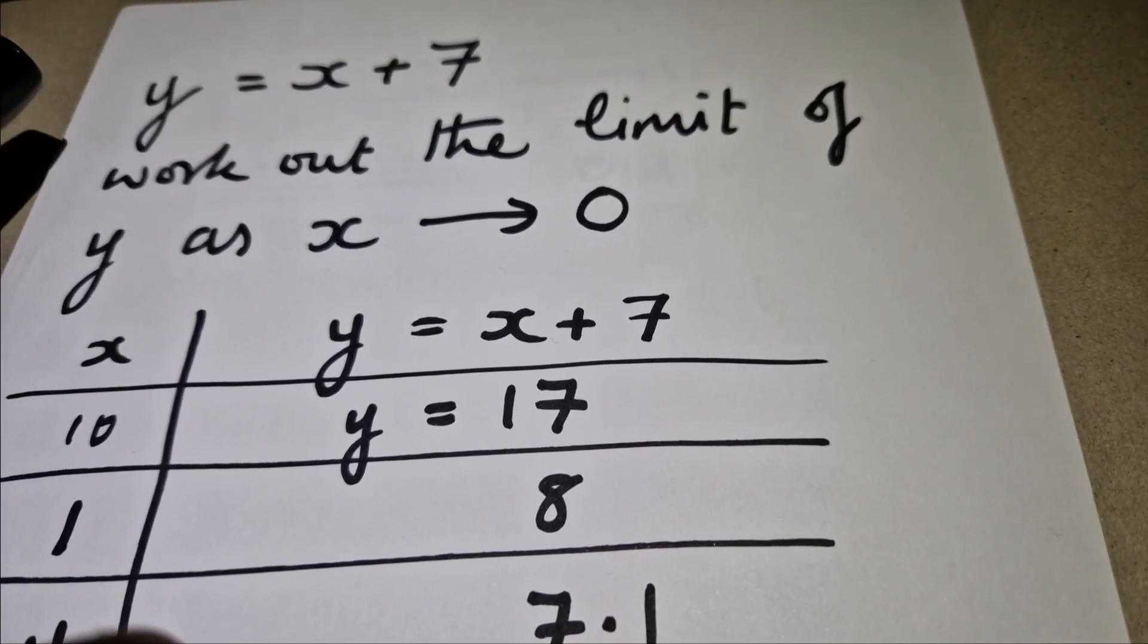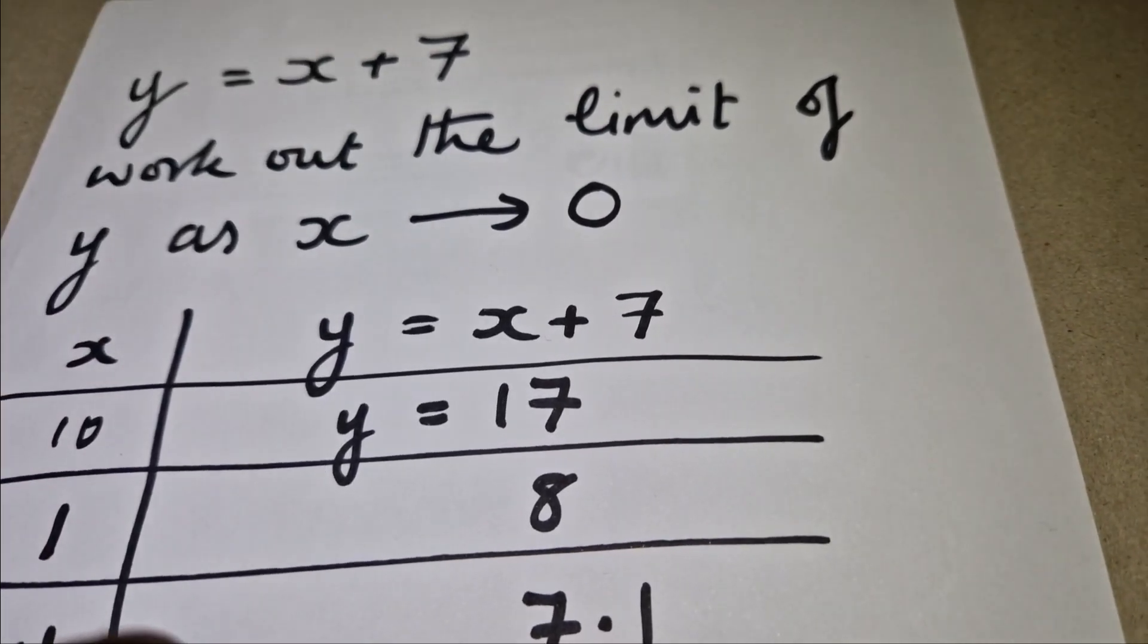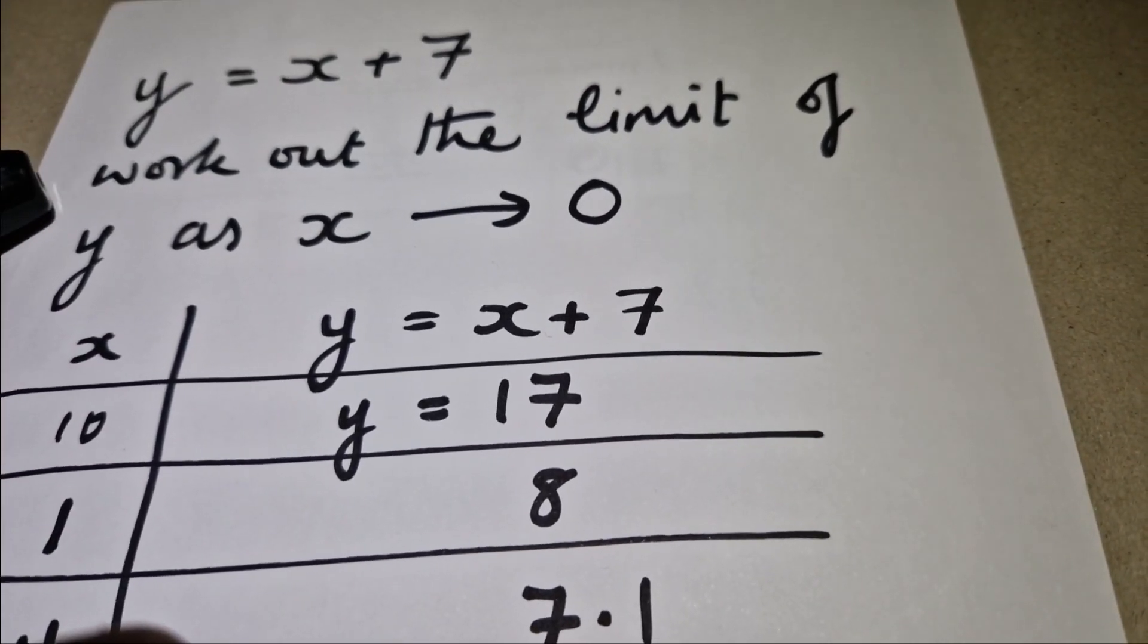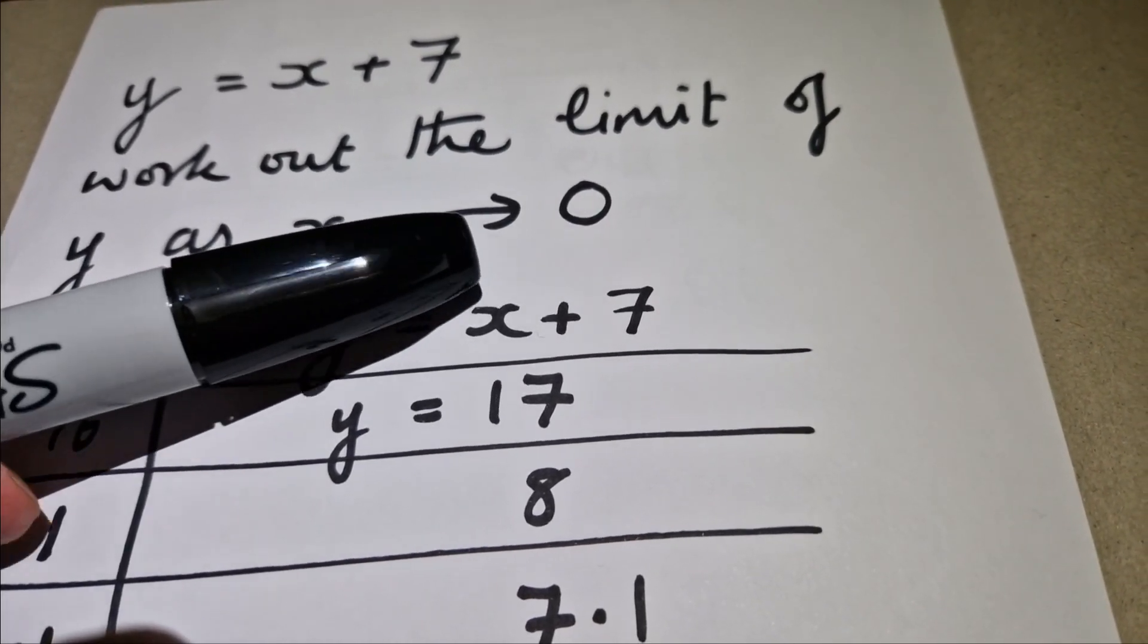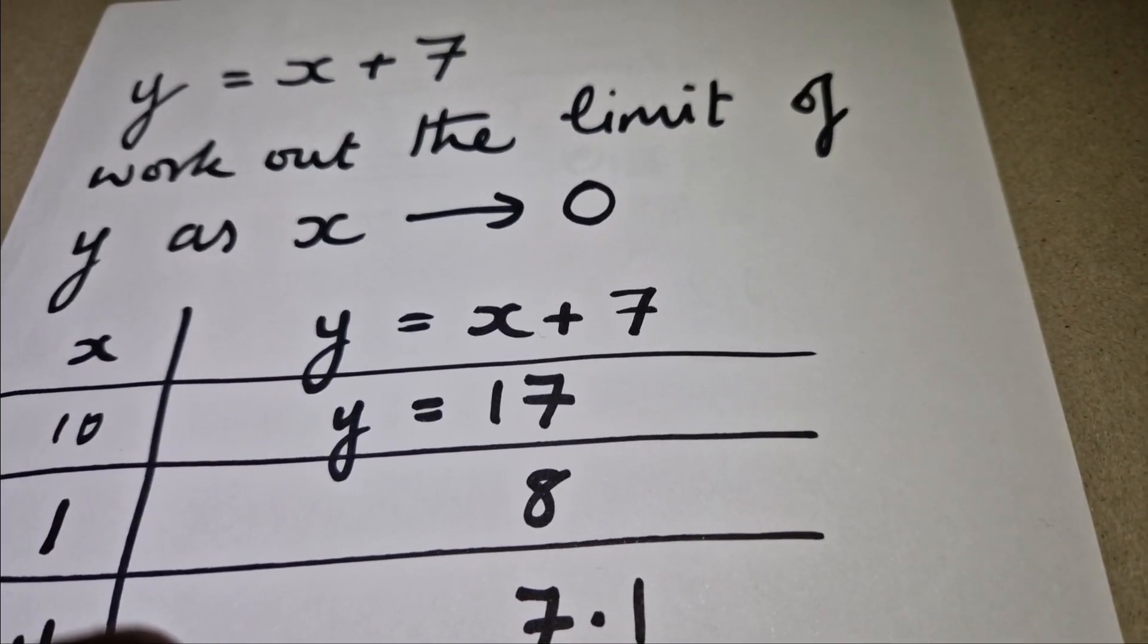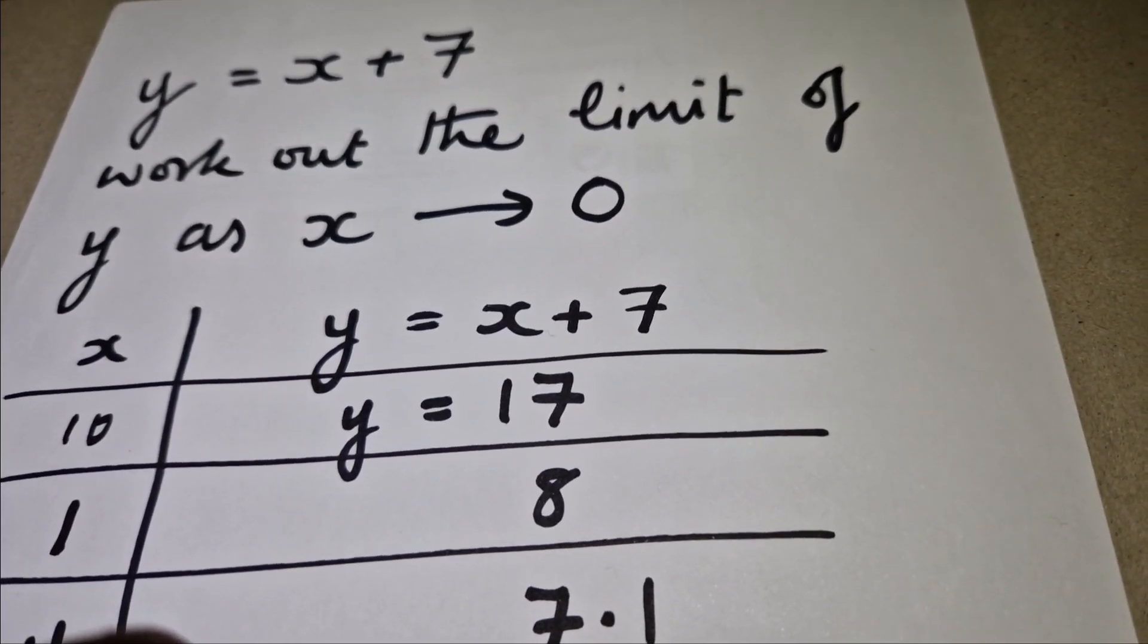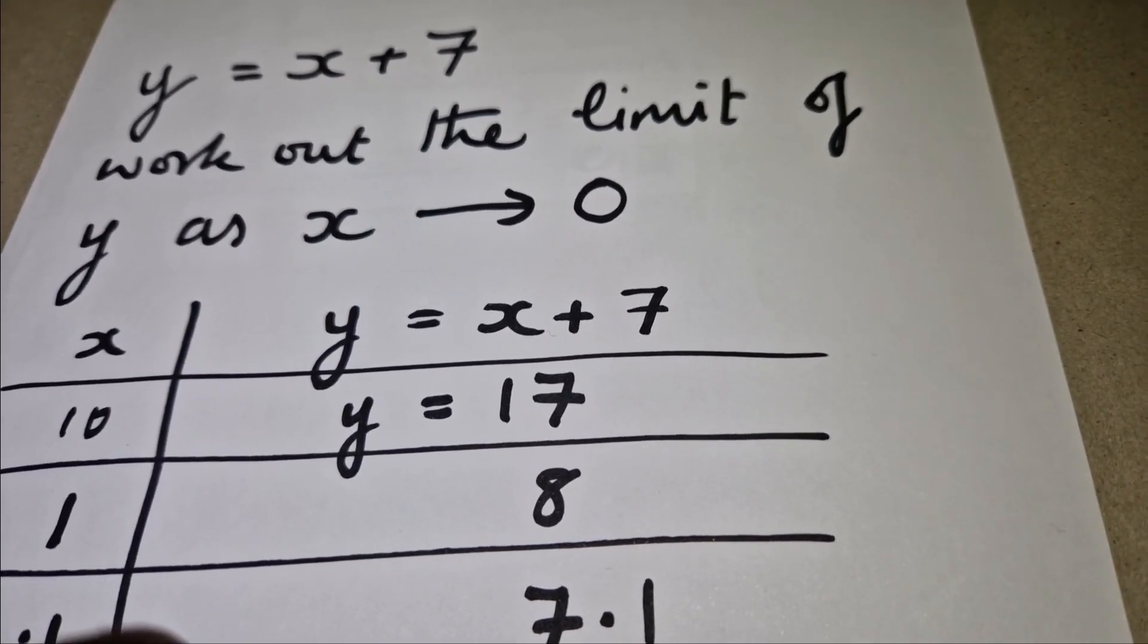We're given the equation y equals x plus 7 and we've been asked to work out the limit of y as x tends to zero. This arrow means tends to, and that simply means approaches. So as x approaches the value of zero, what happens to y?